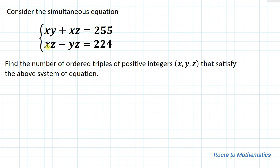The given question is: consider the simultaneous equations x·y + x·z = 255, and x·z - y·z = 224. Find the number of ordered triples of positive integers (x, y, z) that satisfy the above system of equations. So without any delay, let's start the solution.